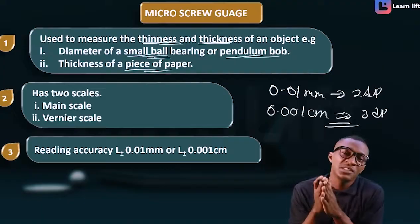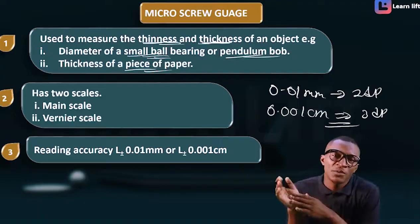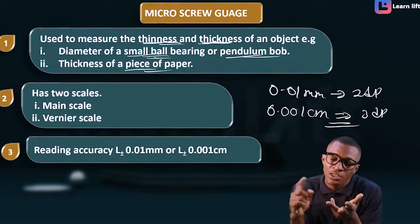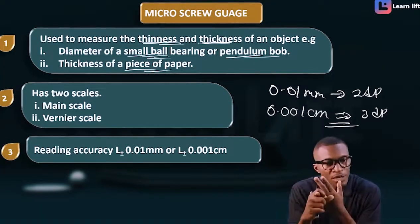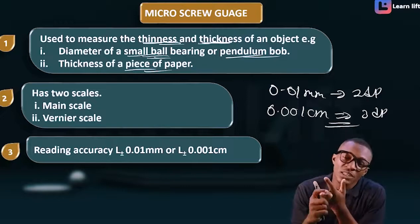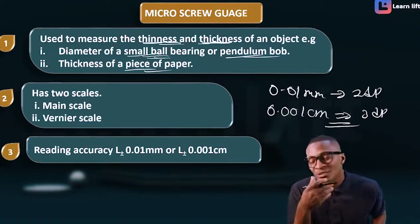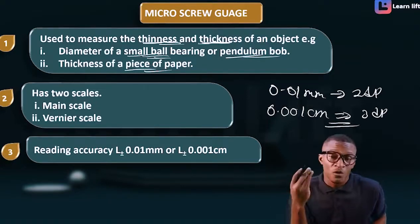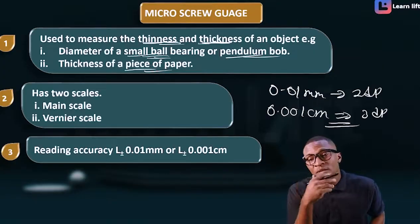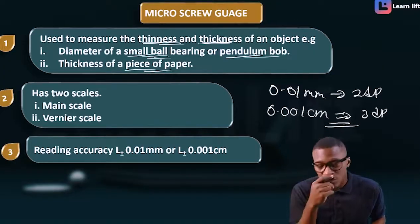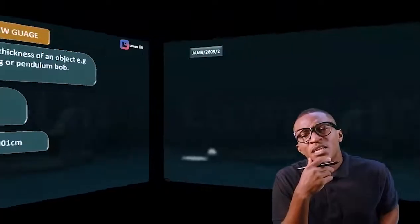So the three things about the micrometer screw gauge: number one, it measures thinness and thickness, e.g. a bearing ball or piece of paper; number two, it has two scales — the main scale and the screw scale or vernier scale; number three, it has a reading accuracy of 0.01 millimeter or 0.001 centimeter.